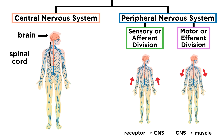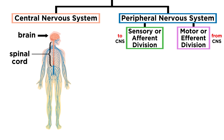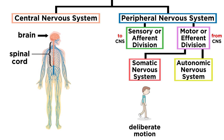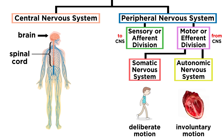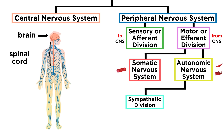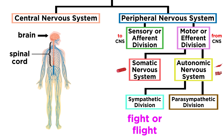The motor division is comprised of the somatic nervous system, when the conscious mind is involved, and the autonomic nervous system, when activity is automatic. Finally, the autonomic nervous system is split into the sympathetic division, which takes over in times of emergency, and the parasympathetic division, which is in charge of regular maintenance.